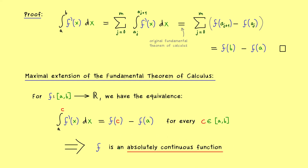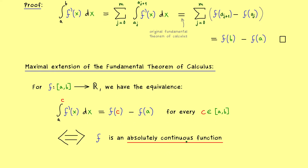The explicit definition of absolute continuity is something for another video. The key result here is the equivalence: every absolutely continuous function satisfies the fundamental theorem of calculus, and these are exactly the functions for which the general theorem holds. In particular, the Cantor function from above is a continuous function, but not an absolutely continuous function, which explains why the fundamental theorem fails for it.